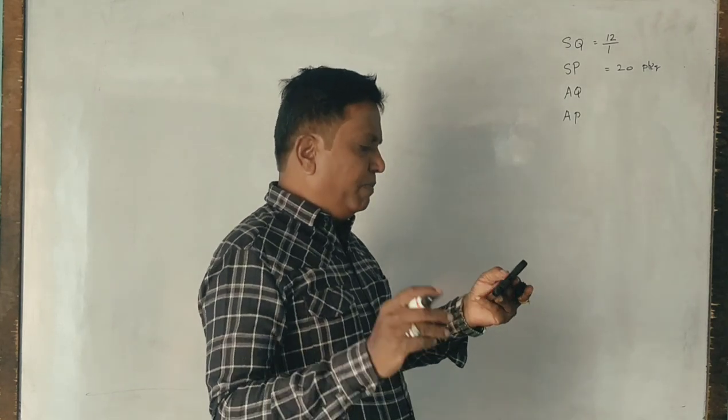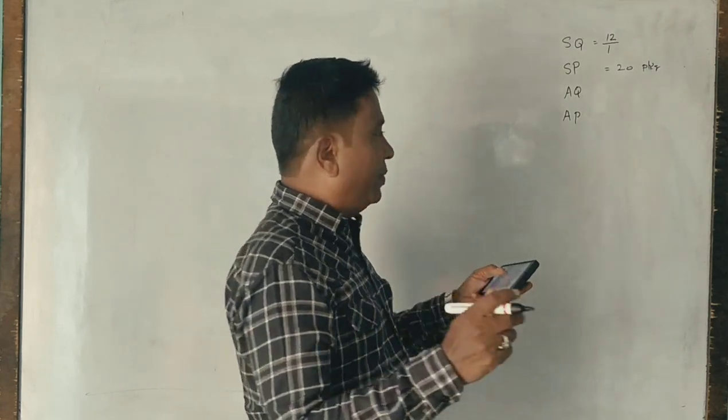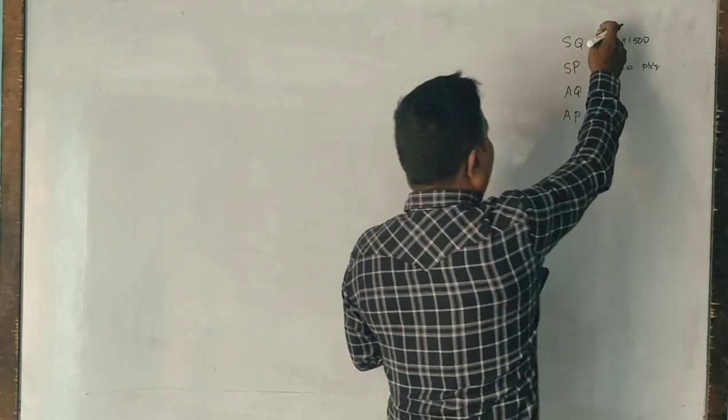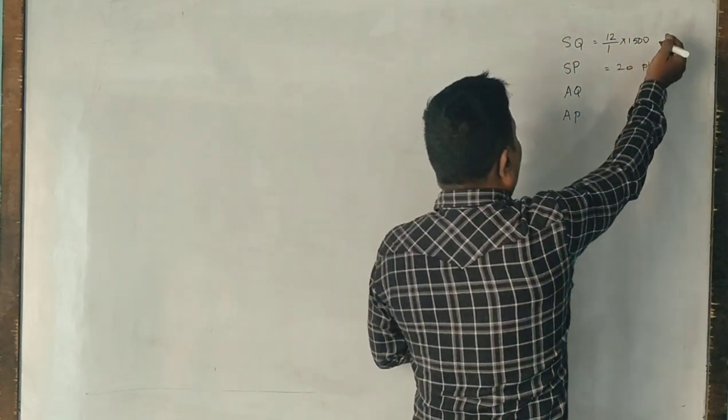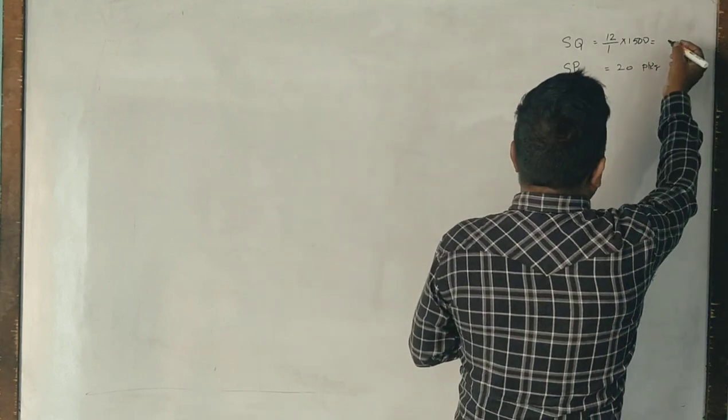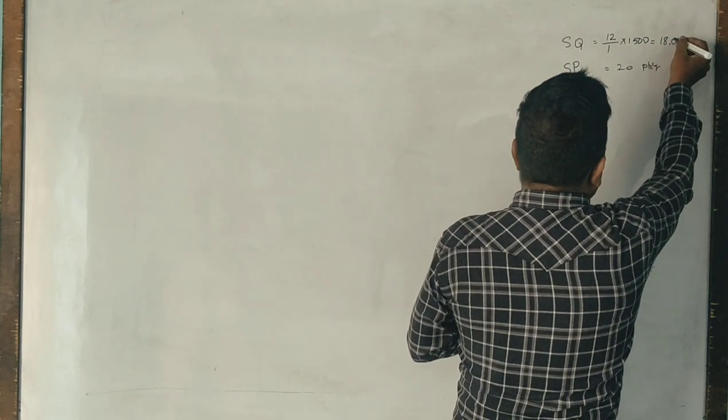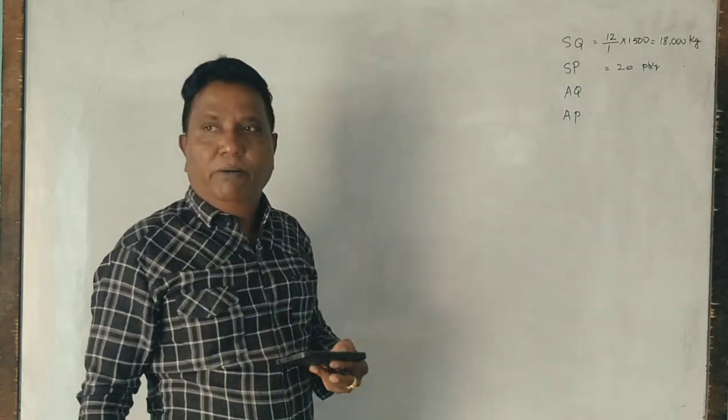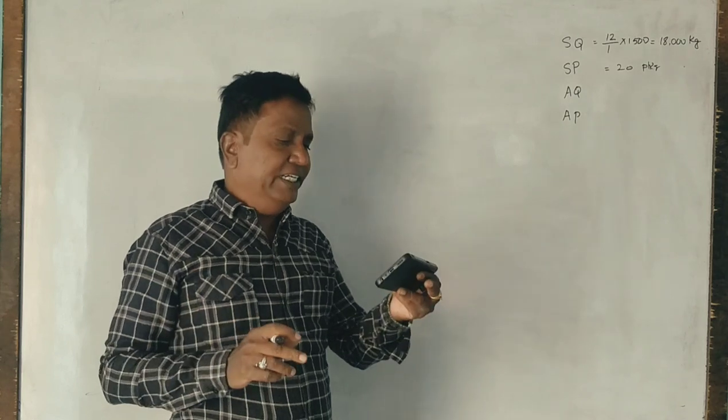Value of material purchased is 30,000, actual output is 1,500. For 12 kg required for one unit, what is required for 1,500 output units? You need 18,000 kg of raw material.